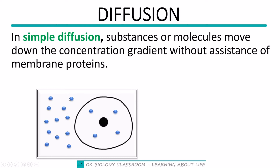Outside the cell we have 12 molecules, but inside the cell we have only 4. So the molecules outside are more, meaning outside the cell the concentration is higher. For simple diffusion, they will just move straight from where they are more to where they are less — from the region of higher concentration to the region of lower concentration.